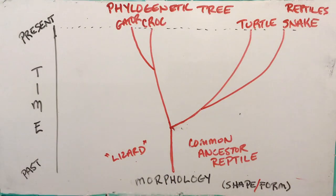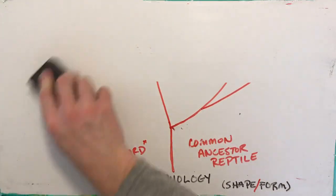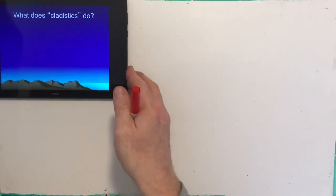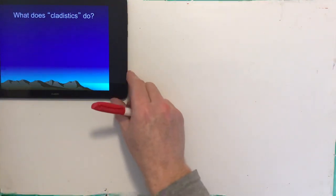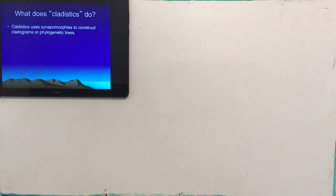That's a phylogenetic tree — kind of a quick five-minute lesson on that. Now let's get into the cladograms that we're going to be focusing on in class. If you want to take a further look at this, pause the video now.